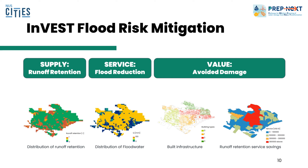These are the corresponding outputs from the INVEST flood risk mitigation model. Supply can be illustrated as the distribution of runoff retention — the red spots indicate that there is higher runoff retention. Service refers to flood reduction; areas with higher runoff retention capacity clearly have a lower flood water volume. Consequently, depending on the type of buildings, flood reduction can bring different levels of economic benefits to the area of interest.